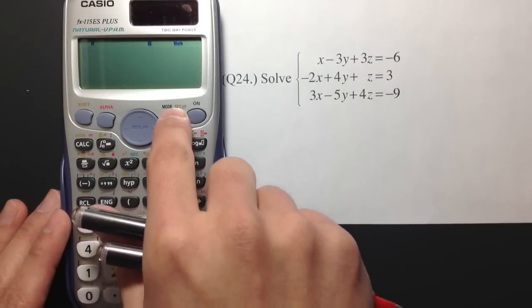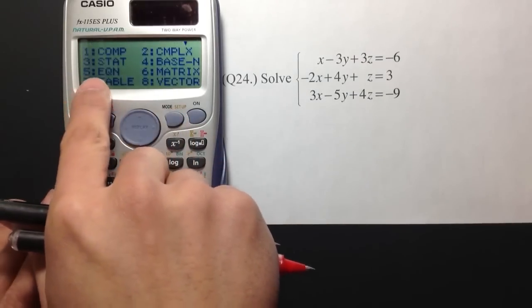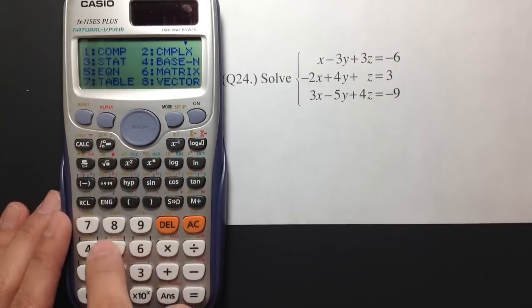The place that we want to go is mode, and then we are going to go to number 5. That's kind of like the equation solver. So, number 5.